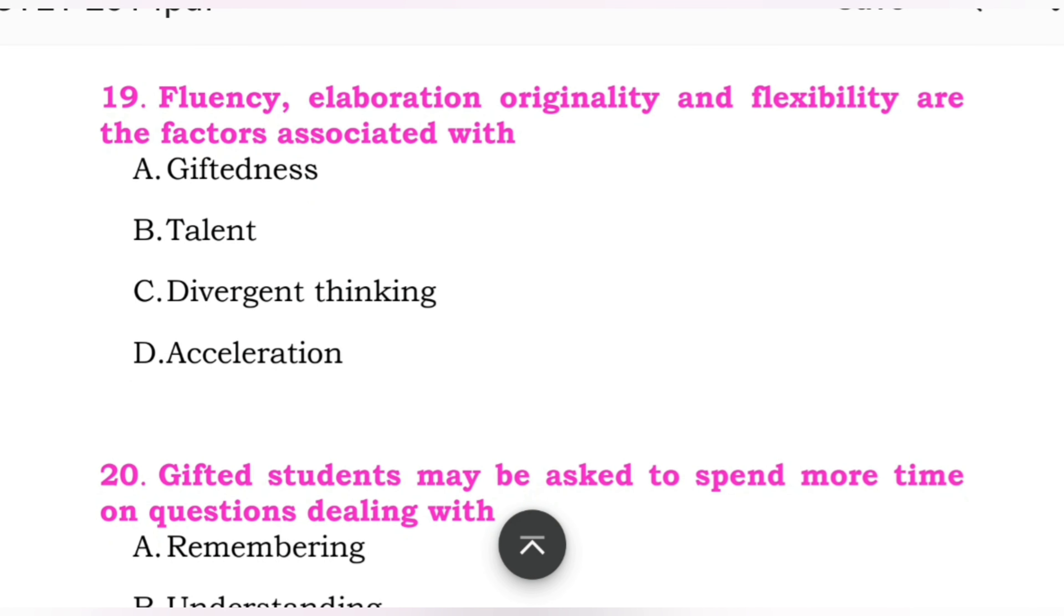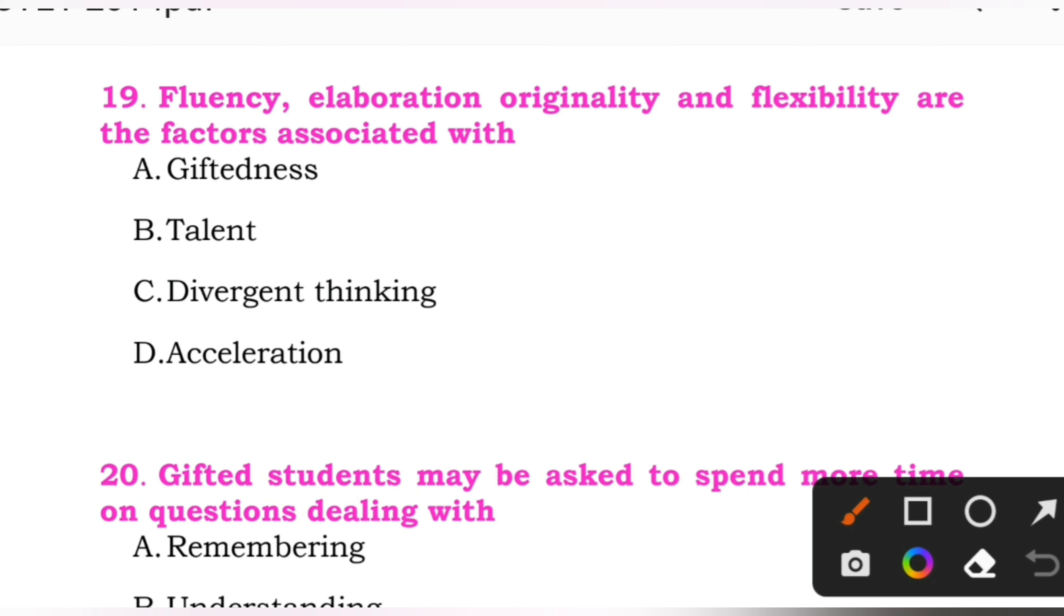Question number 19: Fluency, elaboration, originality, and flexibility are the factors associated with. Options: A: giftedness. B: talent. C: divergent thinking. D: acceleration. Here the right answer is A, giftedness.